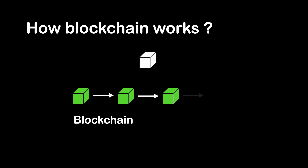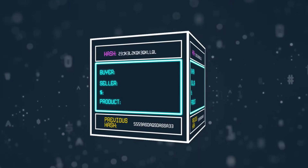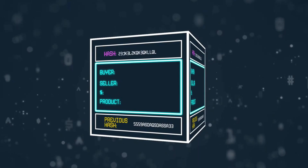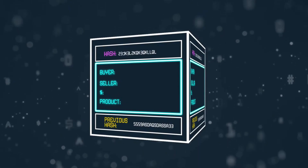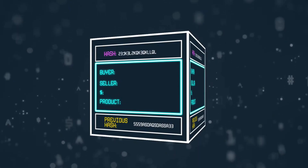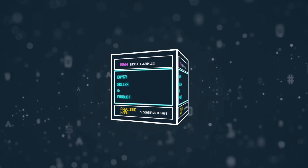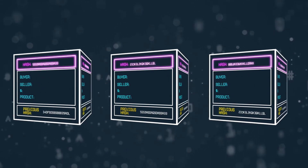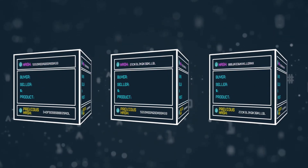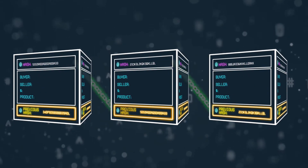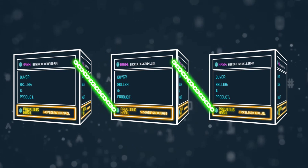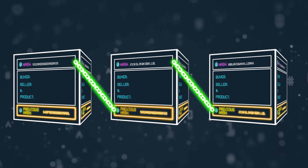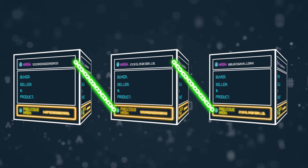So how does blockchain work? As each transaction occurs, it is recorded as a block of data. Those transactions show the movement of an asset that can be tangible or intangible. The data block can record the information of your choice, and it's all written in the smart contract. Each block is connected to the ones before and after it, and these blocks form a chain of data.